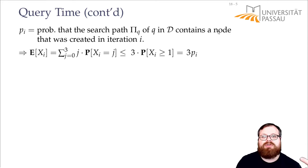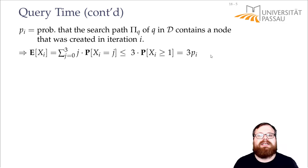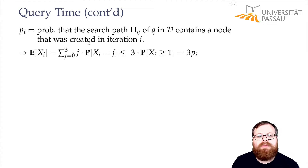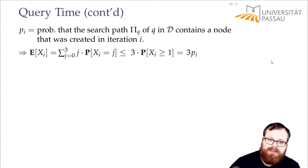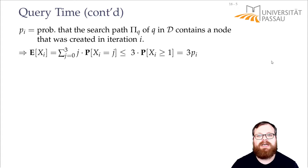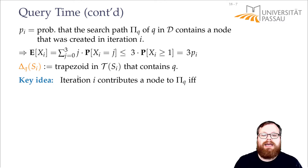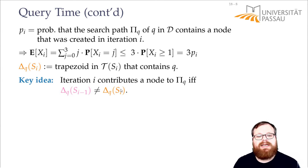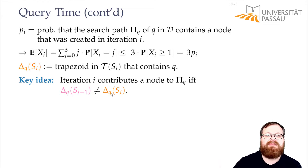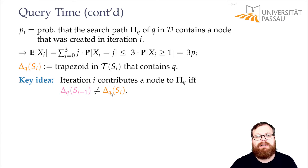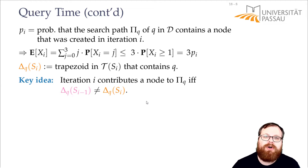This basically tells us: it doesn't matter if there's one, two, or three interior nodes on the path — we always count it as three. That's fine for the analysis; we can overcount. So let's figure out what the probability is that anything was added in iteration i. The key idea is that in step i, we add a node to the query path of Q if and only if the trapezoid containing Q changes. If Q lies in the same trapezoid as in step i-1, the query path is the same, since we only change things locally. Only if this trapezoid was destroyed do we add at least one node to the query path.